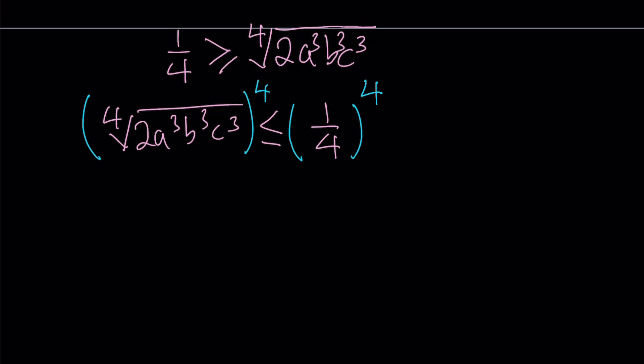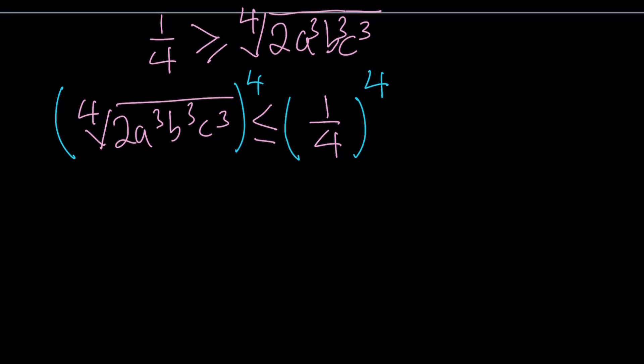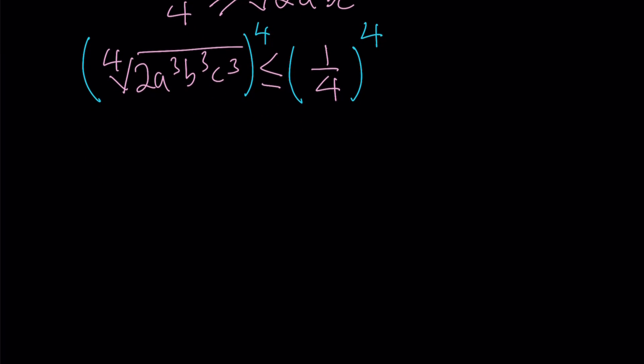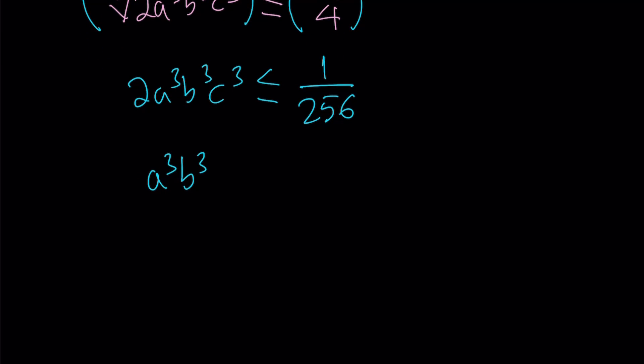Now, let's go ahead and raise this to the fourth power and this number to the fourth power. When we do, a, b, c are positive, remember that. That's important. And because if a, b, c, the product is negative, then this is going to be undefined. But anyways, when you raise it to the fourth power, it's just going to be what's inside. So 2 a cubed, b cubed, c cubed. This is very cool too. Now, 1/4 to the fourth power. 1/4 squared is 1/16. And if you square that, you're going to get 1 over 256. Awesome. We can go ahead and multiply both sides by 1/2. That's going to give us a cubed, b cubed, c cubed is less than or equal to 1 over 512. And notice that 512 is 2 to the ninth power. Therefore, this is 2 to the power negative 9. If you cube root both sides, you're going to get abc is less than or equal to 2 to the power of negative 3, which is going to be 1/8. And guess what? That's what we were trying to prove.